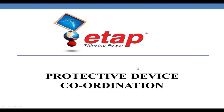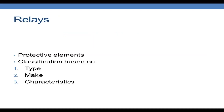In this section we will perform protective device coordination in ETAP. Before entering into the topic, I assume that you are well aware of various protective schemes, basics of power system protection and switchgear. In this lecture we will be talking about relays and their terminologies. Relays are the protective elements used in power systems to detect faults, and upon detection they provide trip signals to the circuit breaker, which then isolates the faulty part from the healthy part.